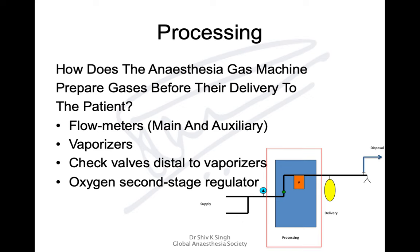Processing is about how the anesthesia machine prepares gases coming in at very high pressure before they are delivered to the patient. This is done through flow meters — main flow meters which we control, or auxiliary flow meters to connect a separate anesthesia circuit or oxygen through venturi devices. Within the machine we have vaporizers to maintain anesthesia, and check valves distal to vaporizers to prevent back pressure.